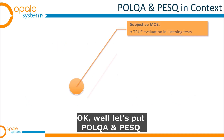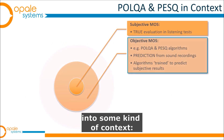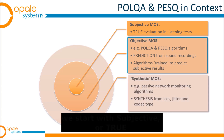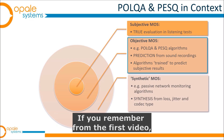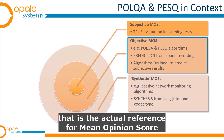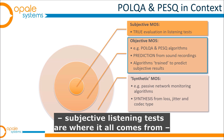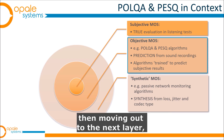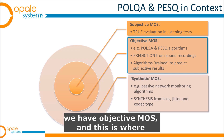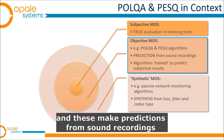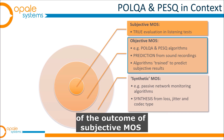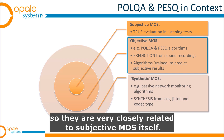Let's put POLQA and PESQ into some context. We start with subjective or true Mean Opinion Score (MOS) at the center of this diagram. From the first video, that is the actual reference — subjective listening tests are where it all comes from. Moving out to the next layer, we have objective MOS, and this is where we find POLQA and PESQ and some similar algorithms. These make predictions from sound recordings of the outcome of subjective MOS, so they're very closely related to subjective MOS itself.